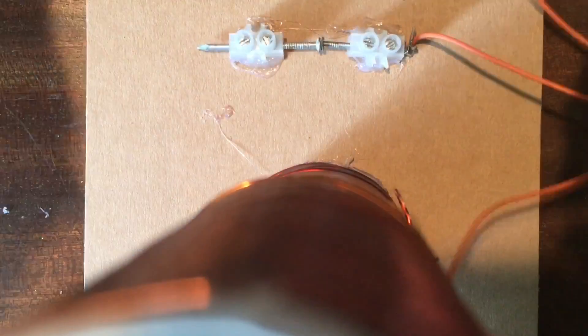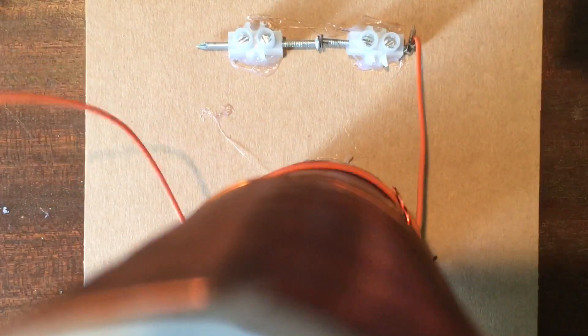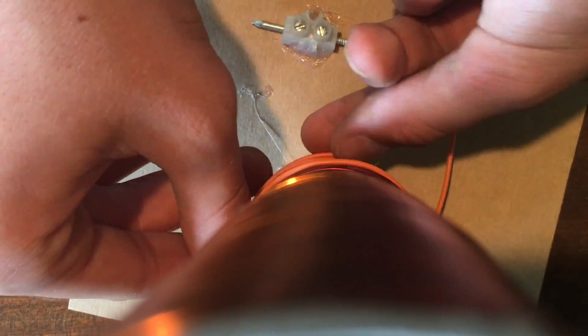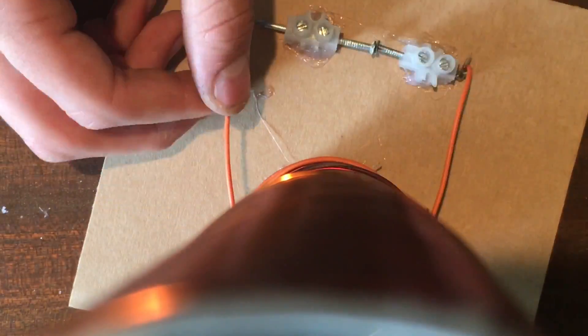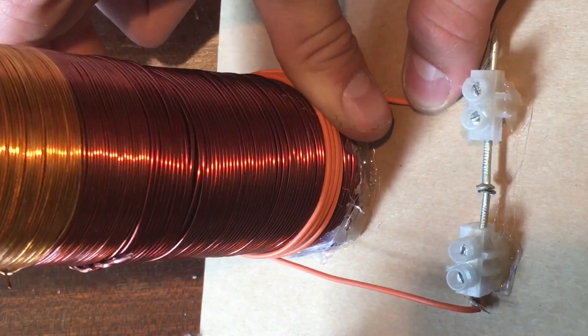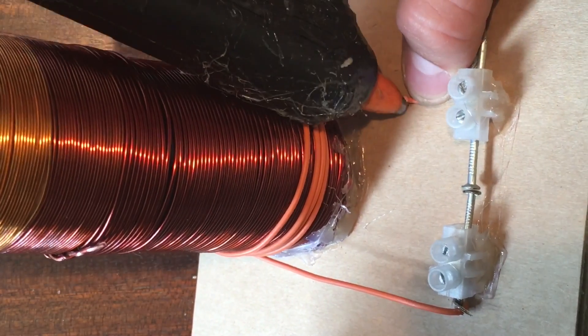Attach a wire to one end of the spark gap. Wrap it around the secondary coil five times, making sure that the windings are close together and very tidy. This will be the primary coil. When you're finished, glue it down to the base.